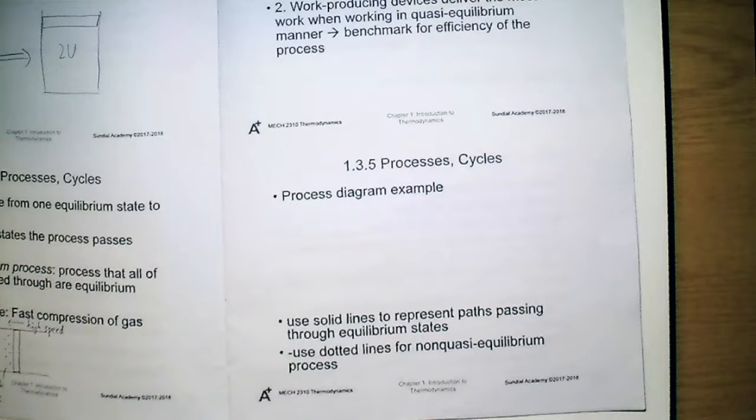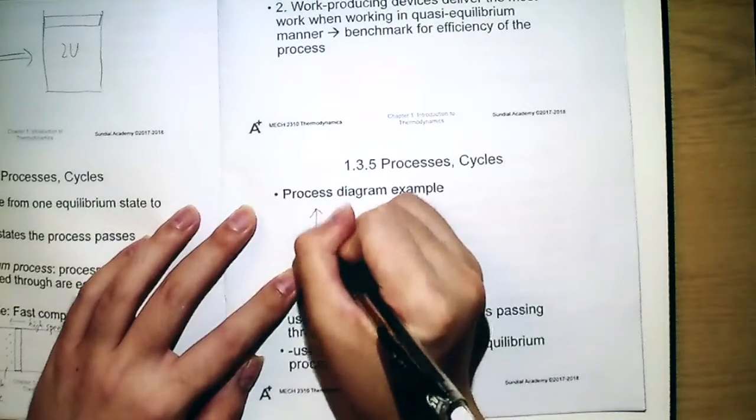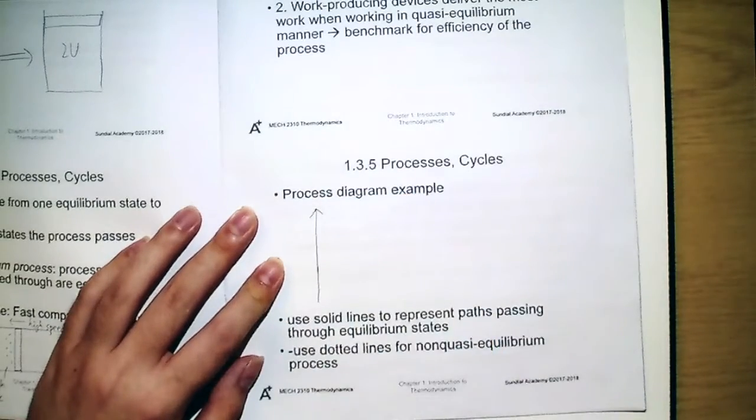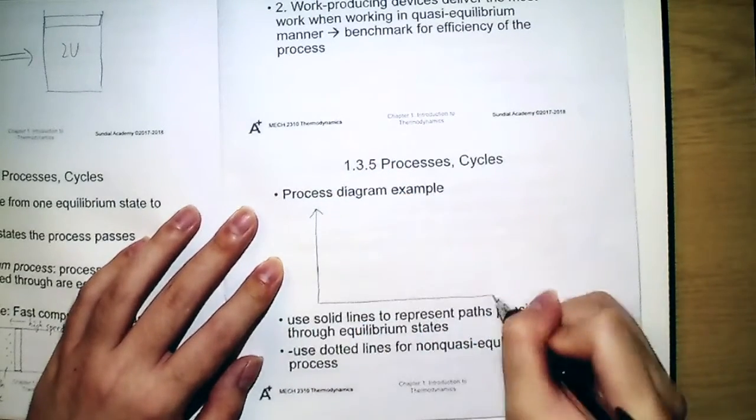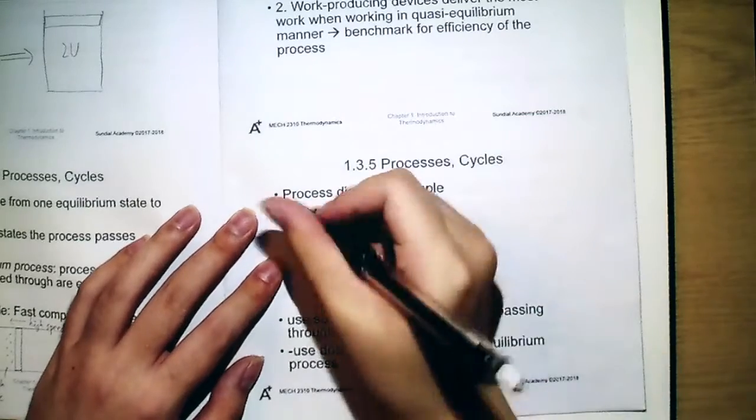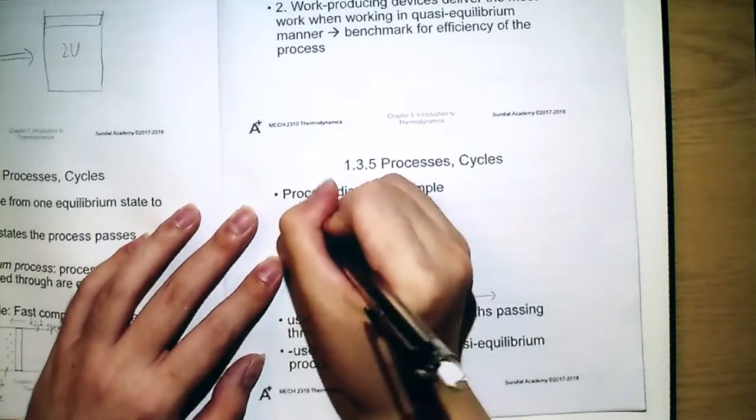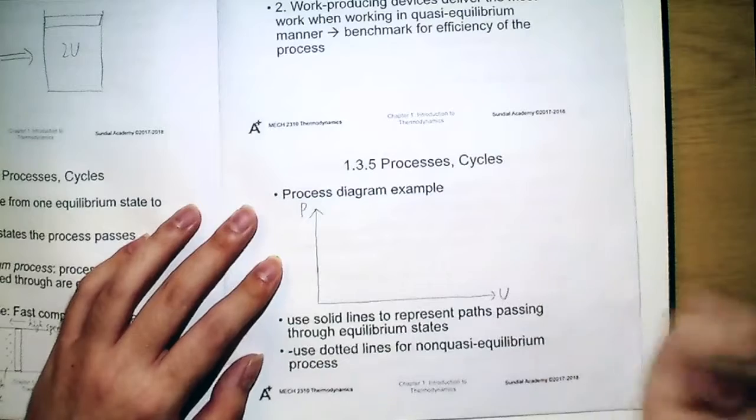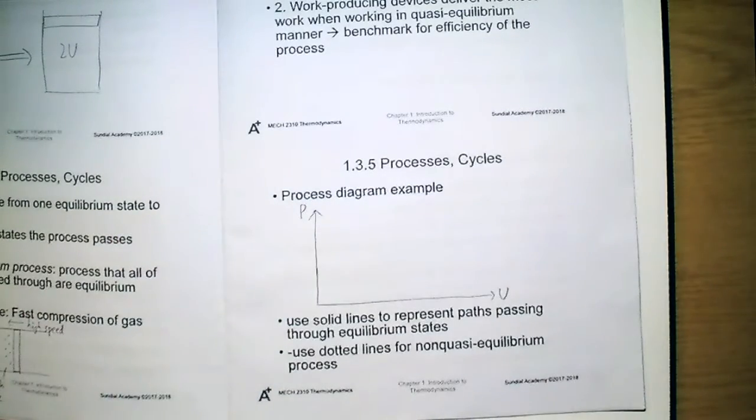If a diagram is drawn by using P against V, then the diagram is called a PV diagram. For example, that is a vertical axis as well as a horizontal axis. If you draw P against V, then this diagram would be called the PV diagram.